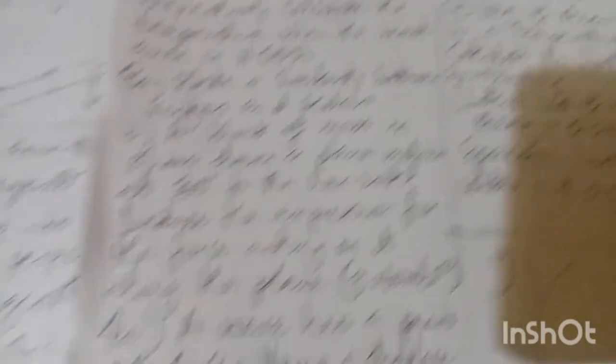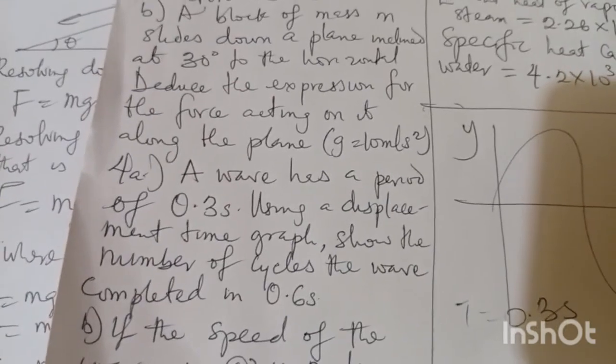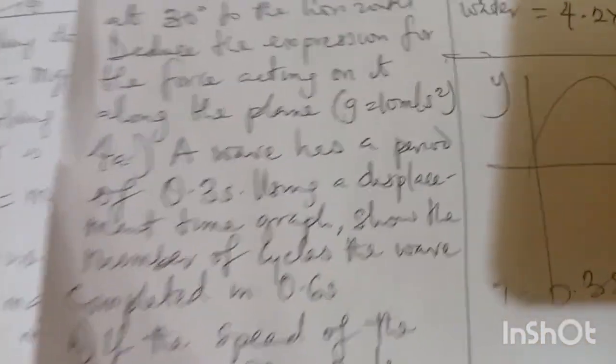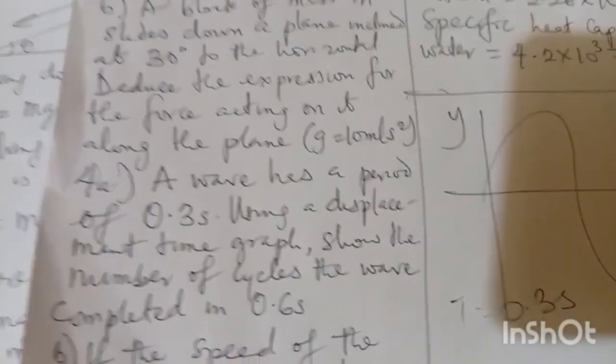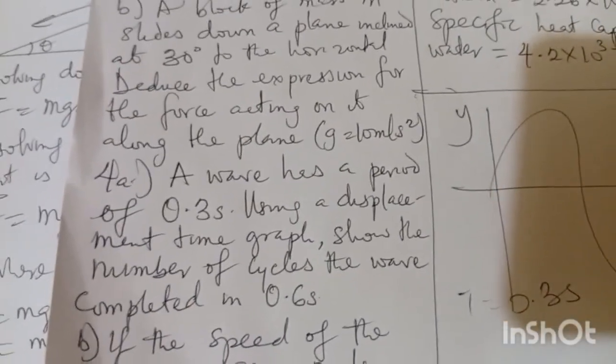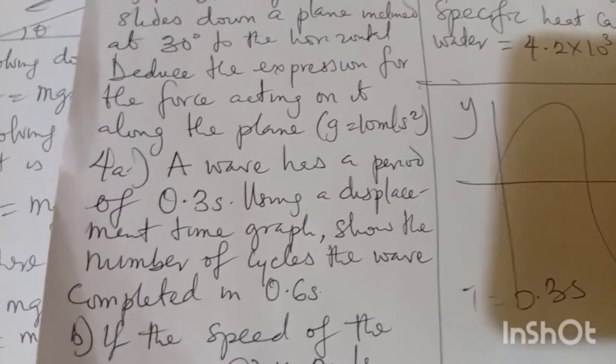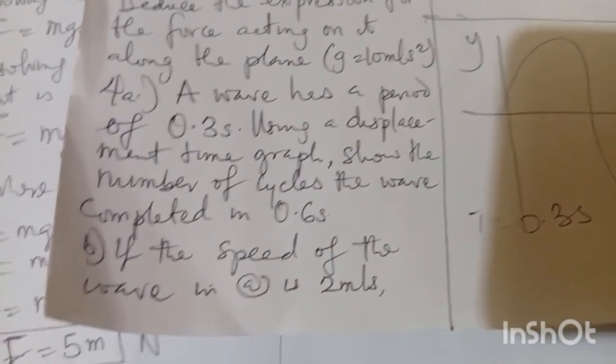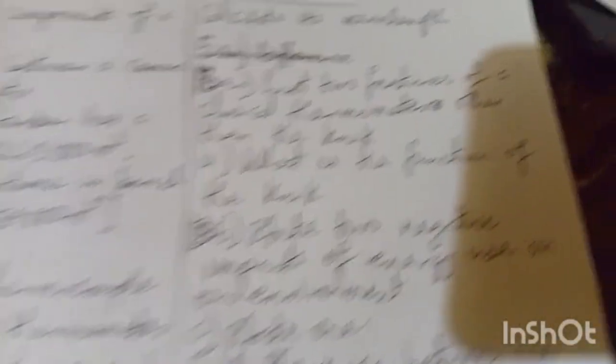Now I want to go to question number four, which I first talked about wave. This is the response. The question gives a period of 0.3 seconds using a displacement time graph. Show the number of circuits completed in 0.6 seconds. And from there I also talk about the speed of the wave and continue from there to find the wavelength.